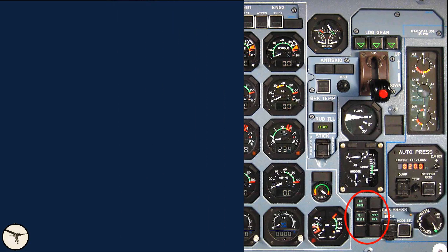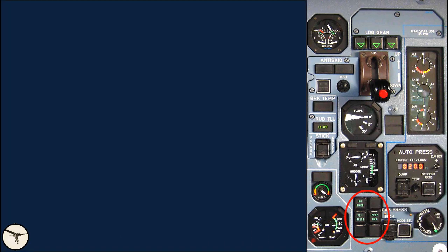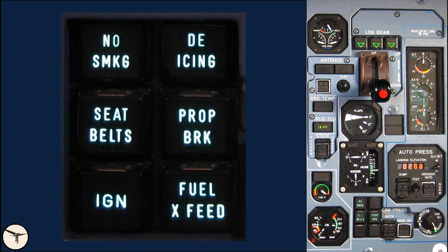To the right side of the center panel, we have the MEMO panel. It shows blue captions when the following systems are activated: no smoking signs and seatbelt signs in the cabin, continuous ignition, airframe de-icing, propeller brake, and fuel cross-feed.